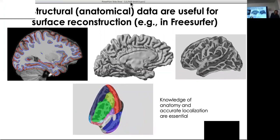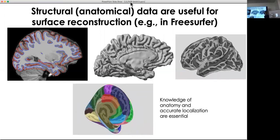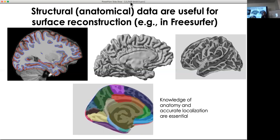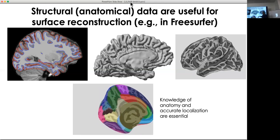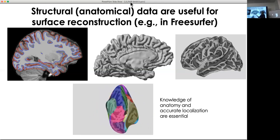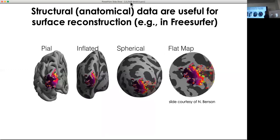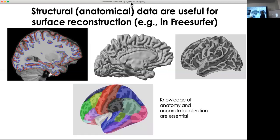These are cortical reconstructions. You can take the reconstruction and inflate it like a balloon so you can see within the sulci and gyri — this is an inflated version of the brain. The atlas is based on an average brain and you can put your subjects into that common space, so you can get these atlases for each of the subjects.